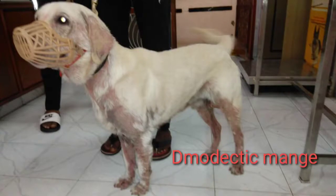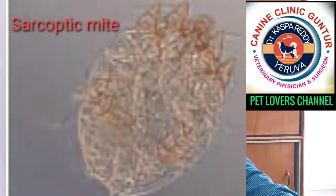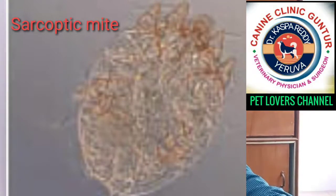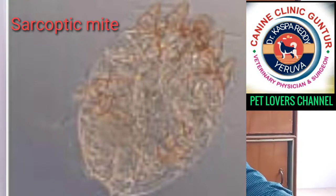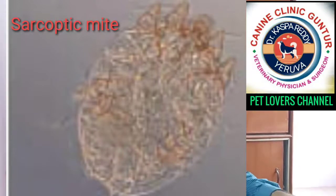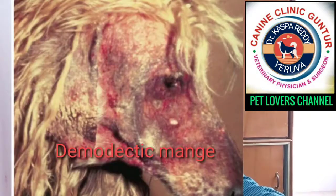Demodectic mange is caused by Demodex canis and is an autoimmune-related disease. If you use corticosteroids in this case, the disease will generally flare up. Sometimes a local veterinary doctor may give steroids — if you feel the disease is still increasing, you should stop that treatment, as it is likely a case of demodectic mange and corticosteroids should not be used. Do not use corticosteroids in any skin disease case unless it is warranted. We use corticosteroids only in emergencies, such as anaphylactic shock. Do not use them unnecessarily — that is my sincere personal advice.